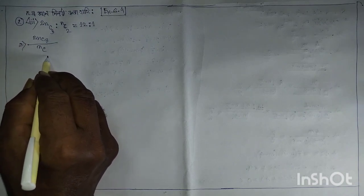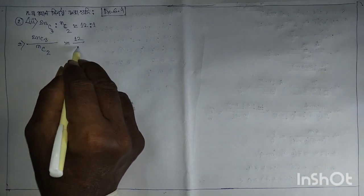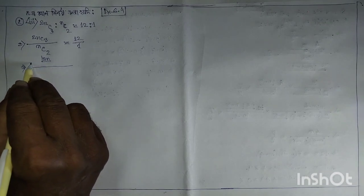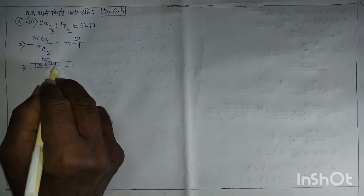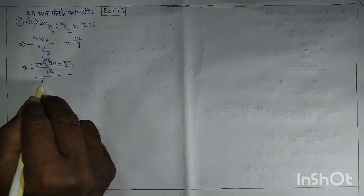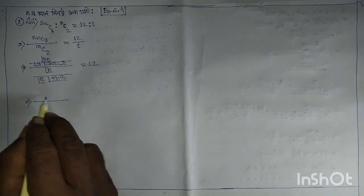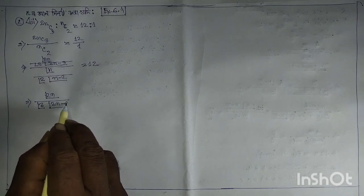mc2 is equal to 12 by 1, implies g twice in c3 by mc2.